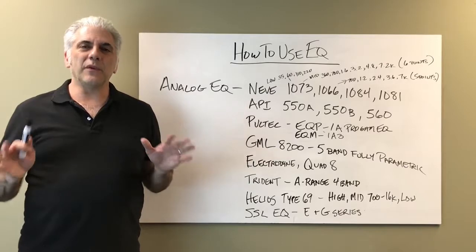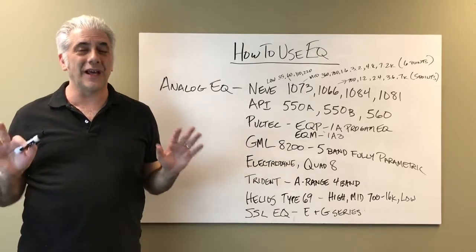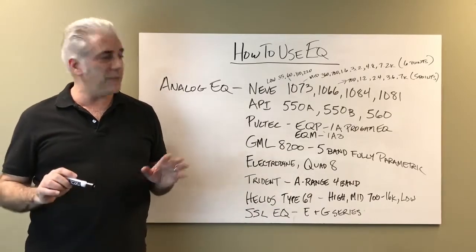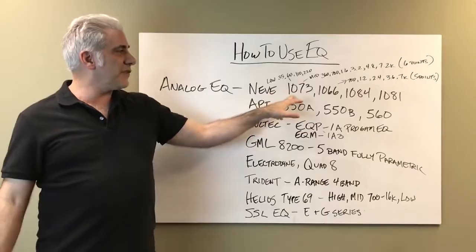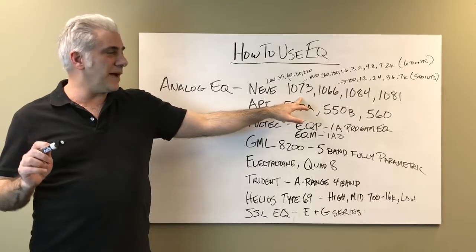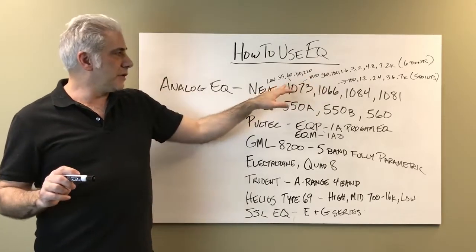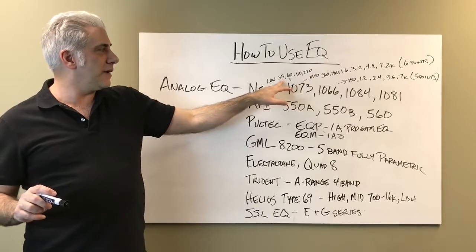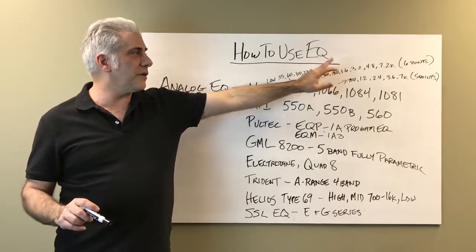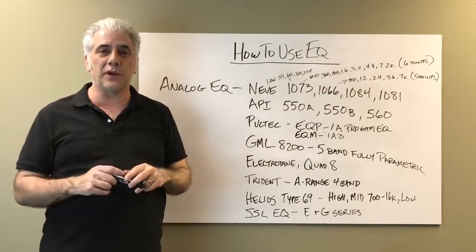Now I want to talk about some of the most famous analog EQs — just for your information, as many of you won't have a chance to work on these. The Neve 1073 is a Class A mic pre with a phenomenal sounding EQ and a high-pass filter. Its low frequencies are 35, 60, 110, and 220 Hz. The mids are 360 Hz, 700 Hz, 1.6k, 3.2k, 4.8k, and 7.2k — so it has six points in the mid range.